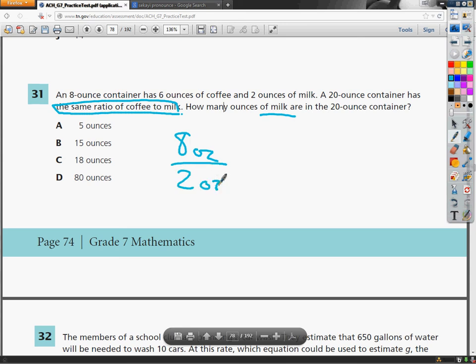The same relationship is still in play with a 20 ounce container. So this is one of those I have 2 things which would be containers versus milk. I have 3 numbers: 8 ounce container, 2 ounce milk, 20 ounce container. And I'm looking for milk.